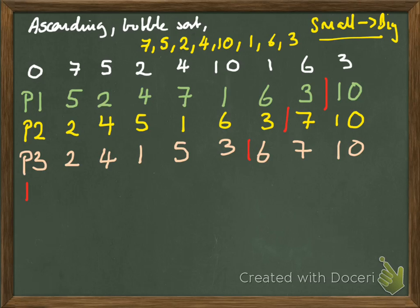Pass 4. 2 and 4, that's fine. Consider 4 and 1, swap. 4 and 5 remains. 5 and 3, swap. 5 and 6, that's fine. 6 and 7, that's fine. 7 and 10, and that remains here. It takes ages, doesn't it? It is absolutely tedious. But there we go.